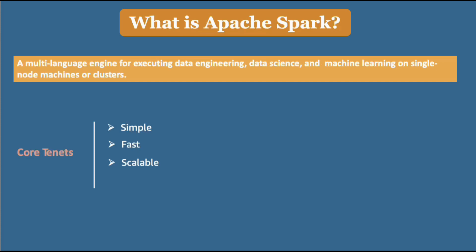Scaling from one node to thousands of nodes in a short span of time is another important criteria for Spark. The last principle is unified, which means it has to interoperate with multiple frameworks, APIs, and data sources.